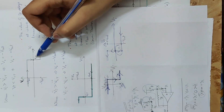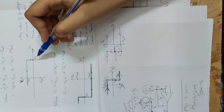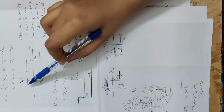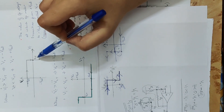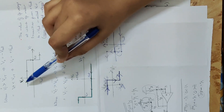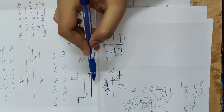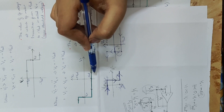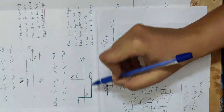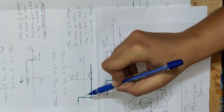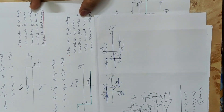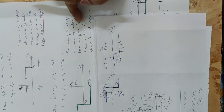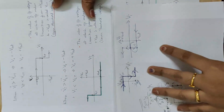In the upper threshold case, the value of input voltage at which the output makes a transition from plus Vsat to minus Vsat is the upper threshold voltage. The lower threshold voltage is the value of input voltage at which the output makes a transition from minus Vsat to plus Vsat. This is the basic difference between upper threshold and lower threshold.